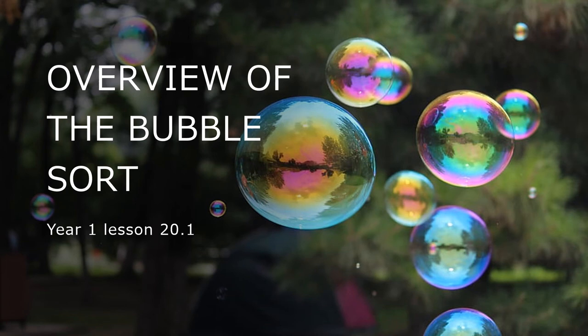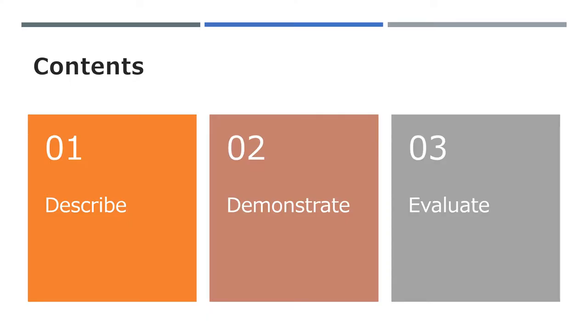Welcome back. This week we're going to learn about sort algorithms, and we're going to start by learning the simplest sort algorithm: the bubble sort. In this lesson we'll describe how the bubble sort works, demonstrate it, and evaluate its strengths and weaknesses. Next lesson we'll write a program to do the bubble sort.